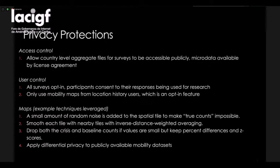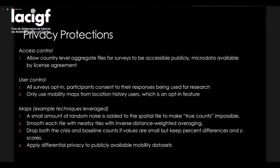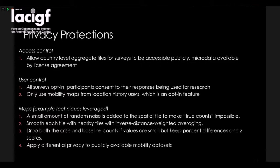Some other ways we protect privacy in our maps products: we can add random noise to obscure the exact number of users in a particular area. We can also use a technique called smoothing, which refers to creating a weighted average, to make it difficult to determine the precise number of users in a given area. We also have a simple technique of dropping small counts of users — when population density is low in a part of the globe, we completely remove those parts from our analysis.